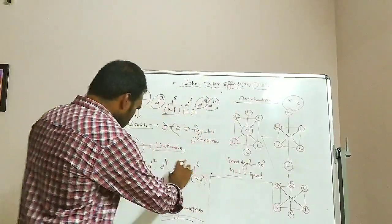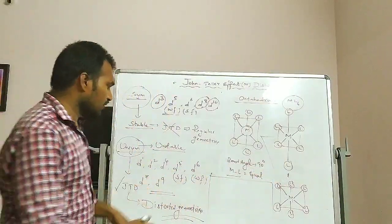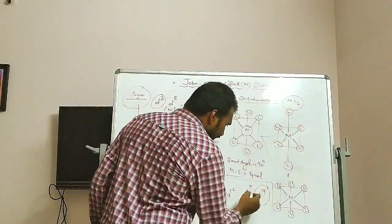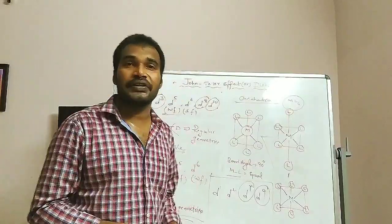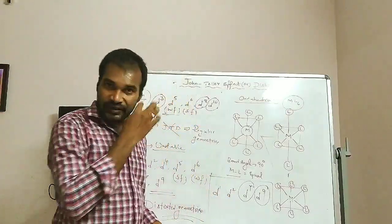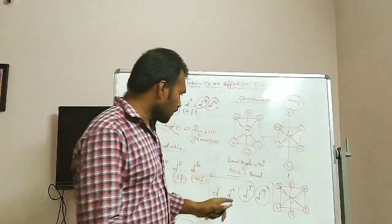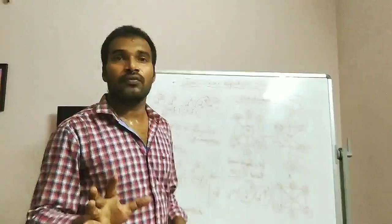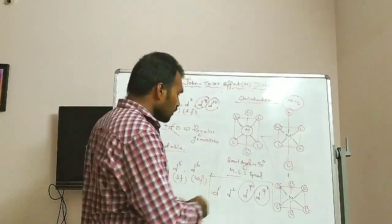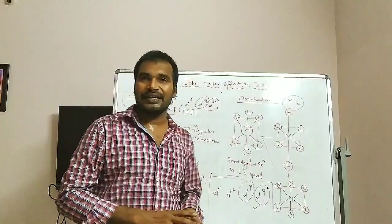Among the unsymmetrical configurations, when comparing D1, D2, D7, and D9 — in D9 and D7 we observe maximum distortion, whereas in D1 and D2 distortion is minimum. In D1 and D2 there are very few electrons, so repulsions are less and distortion is also less. In D7 and D9 there are a large number of electrons in the d sub-shell, so repulsions and distortions are maximum. D9 shows the maximum distortion overall.